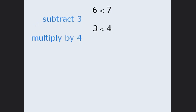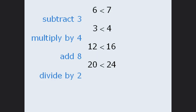Similarly, if we multiply both sides by 4, the inequality remains, since 12 is less than 16. Adding 8 to both sides results in 20 is less than 24, which is a valid inequality. Dividing both sides by 2 results in a valid inequality as well. So it would appear that inequalities behave the same as equations do — if you perform the same operation to both sides, the inequality remains intact.